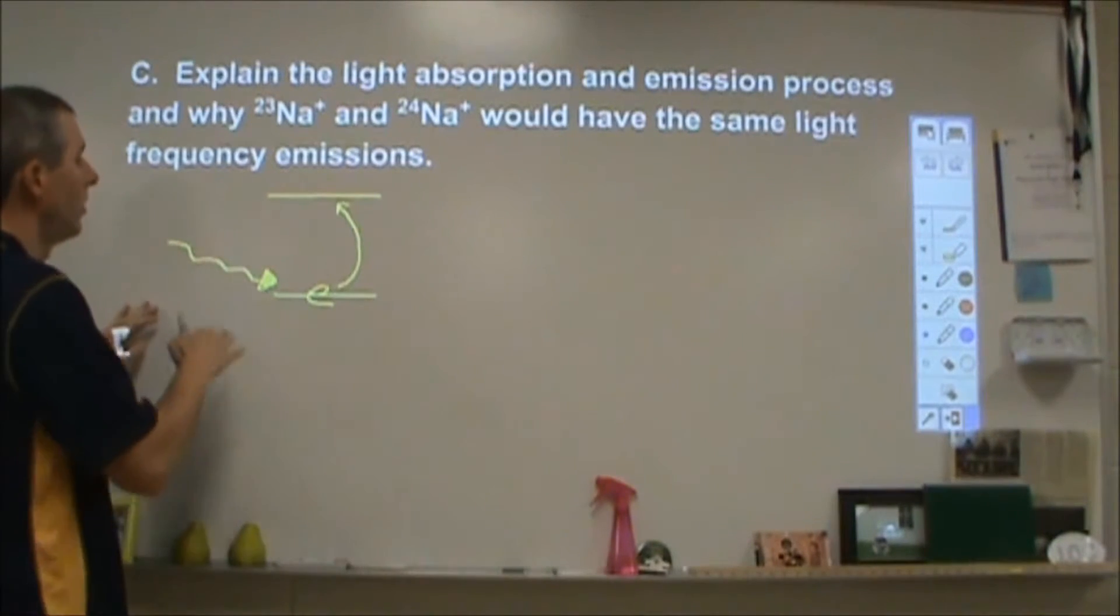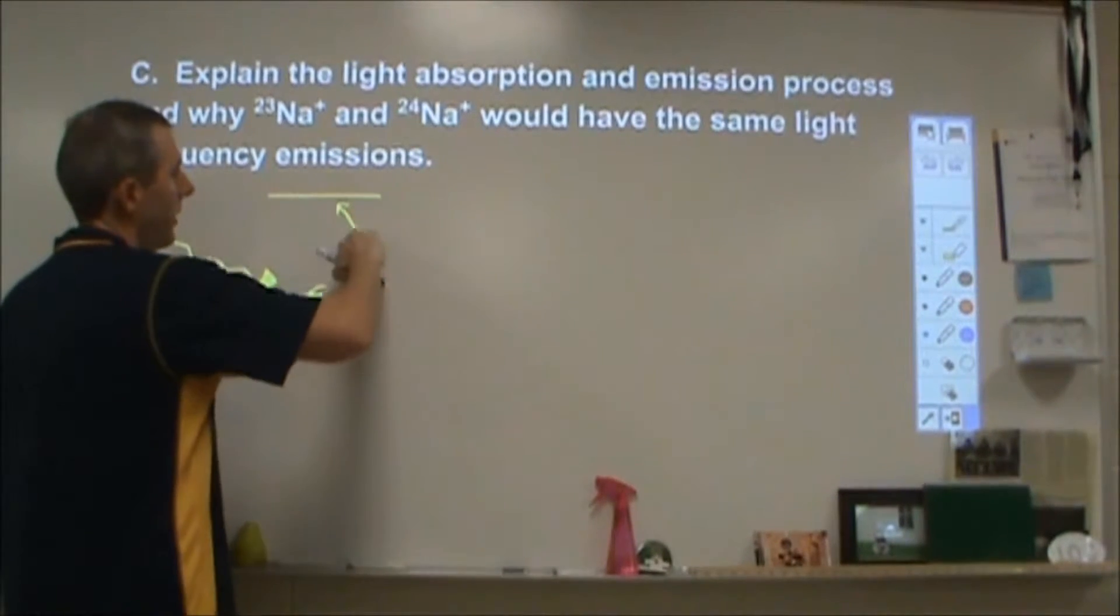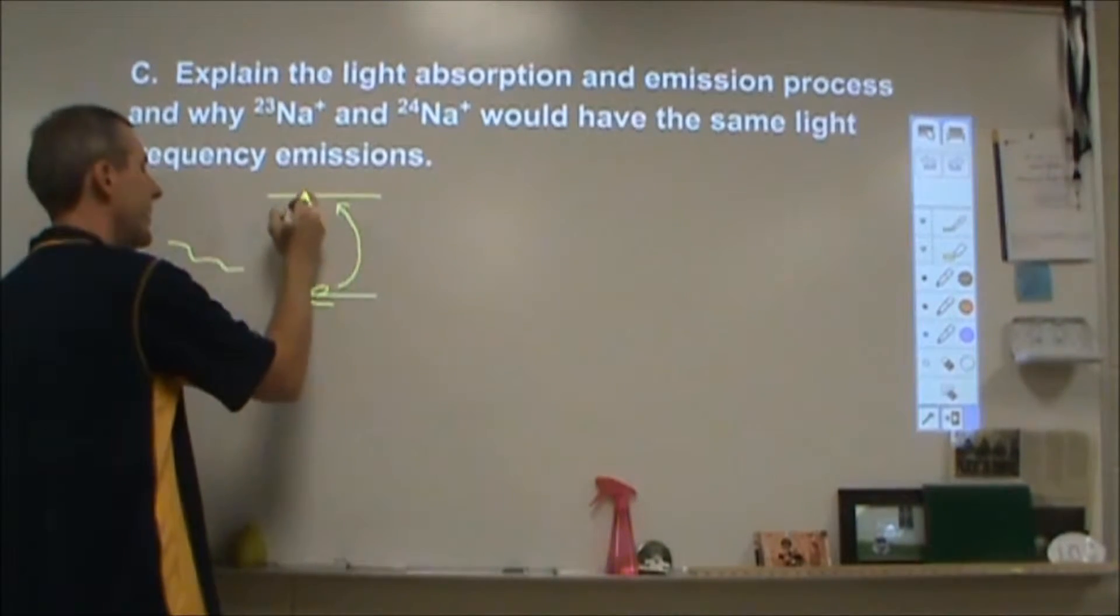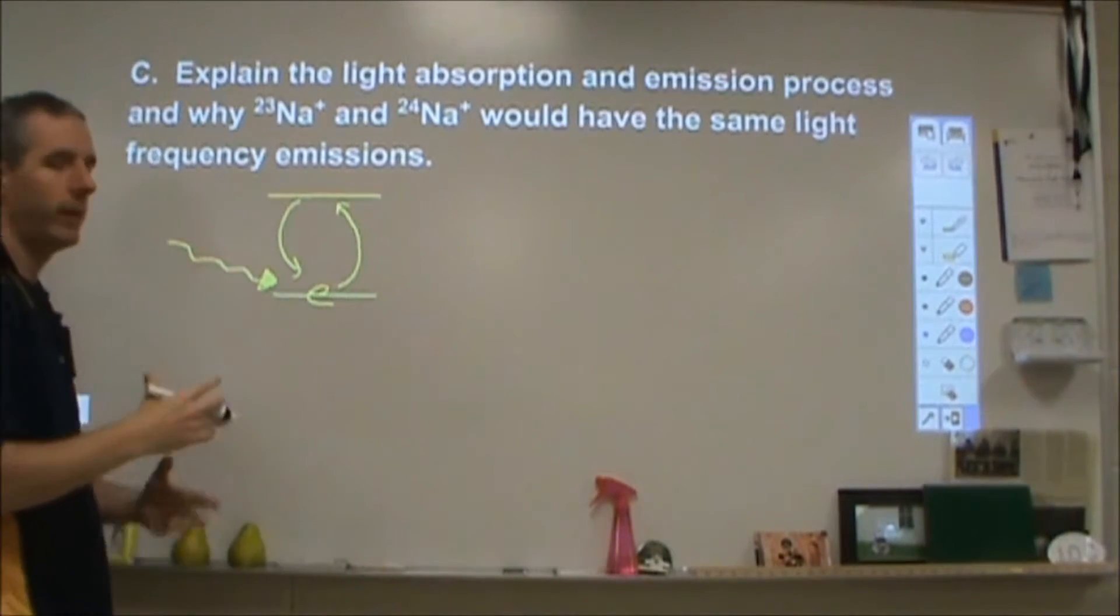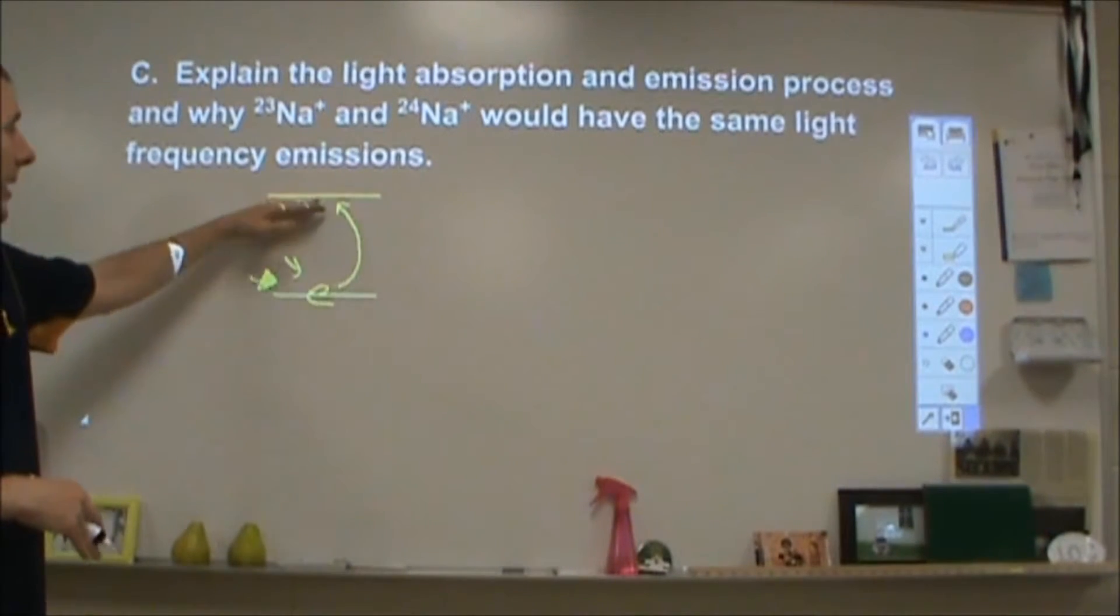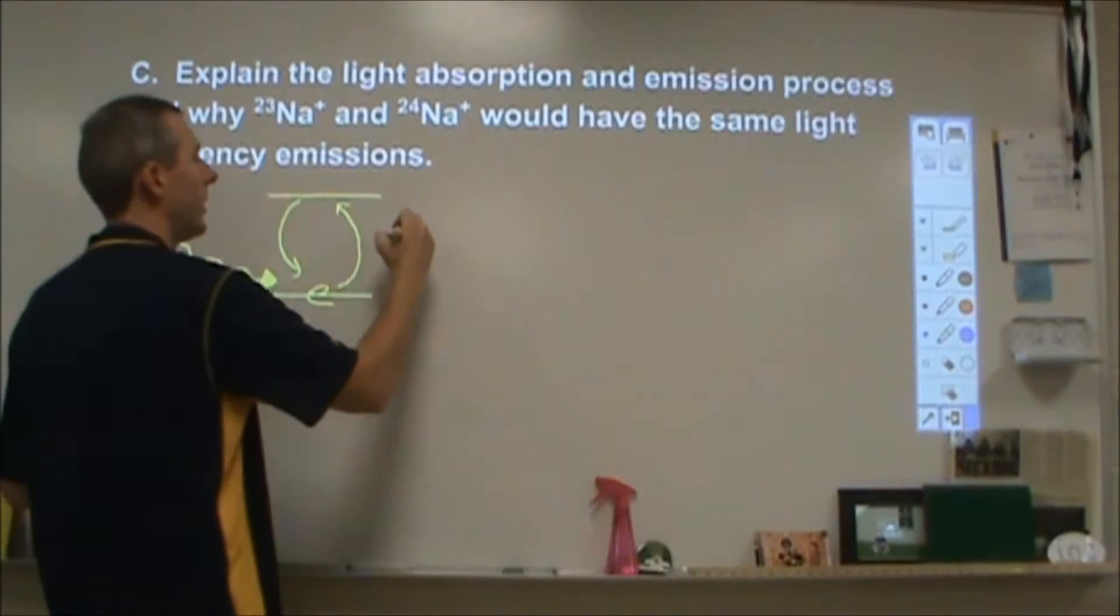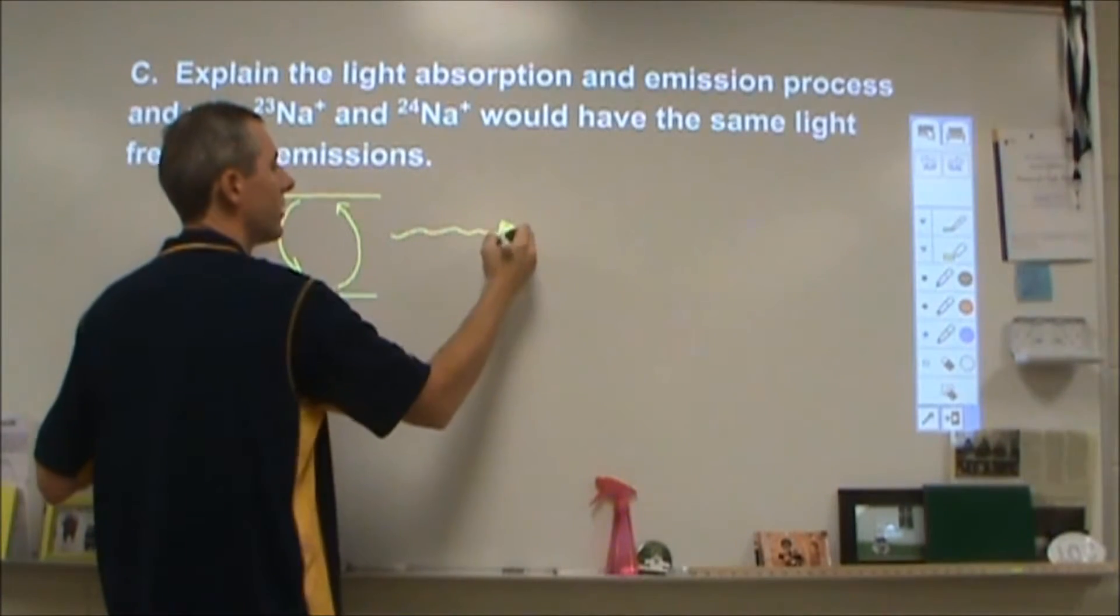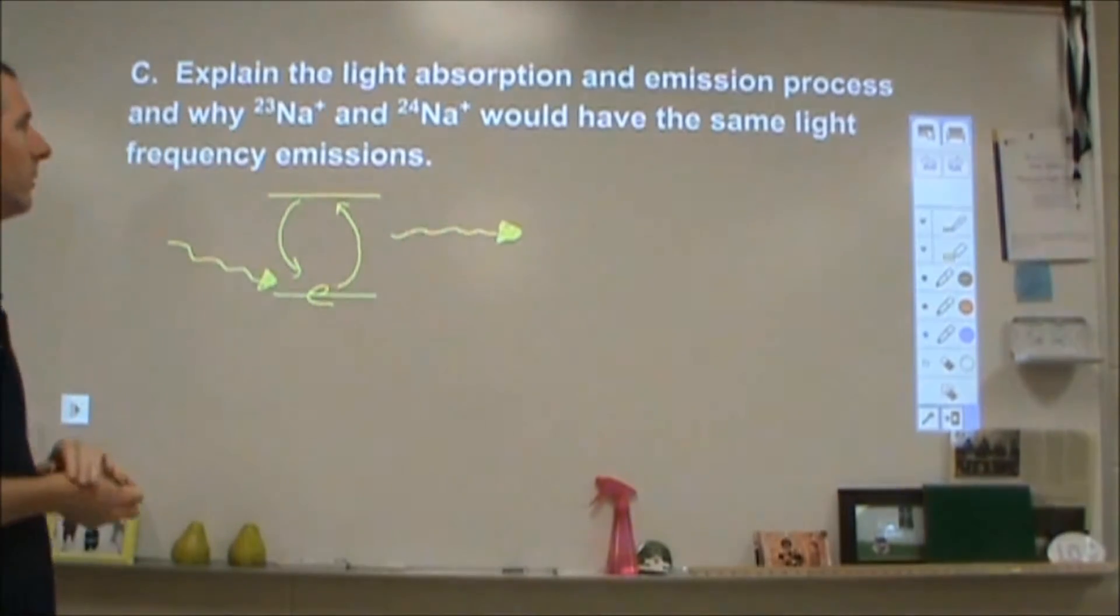So when the light is absorbed, the electron will go up into a higher energy level. And then once it's up there, that electron will collapse back down to a lower energy level, perhaps back to a ground state. And then when that happens, your light gets re-emitted in some new direction.